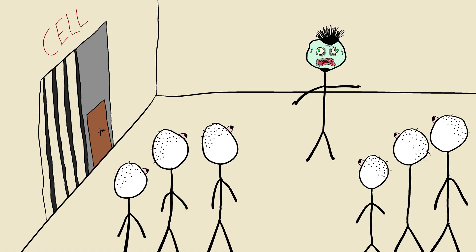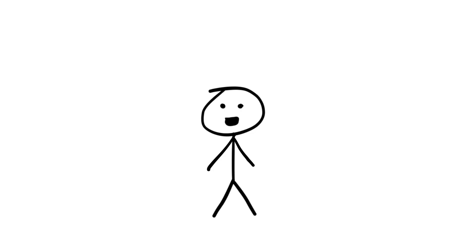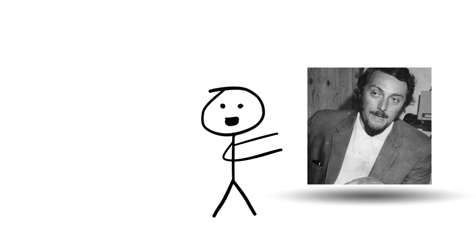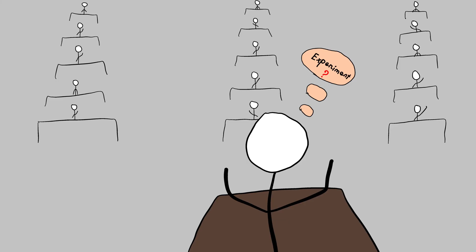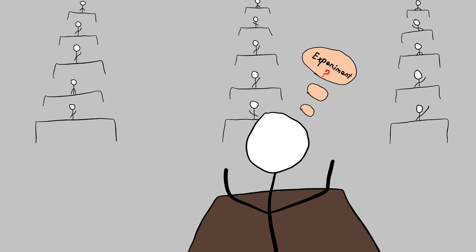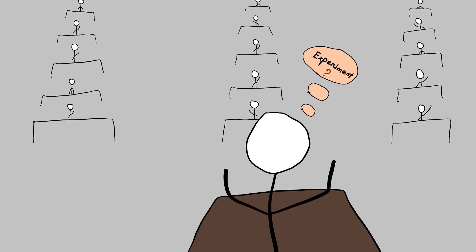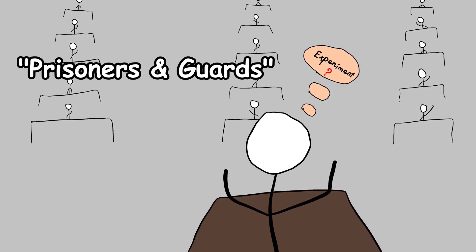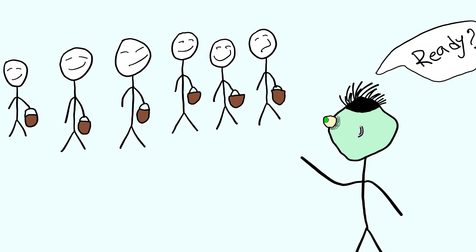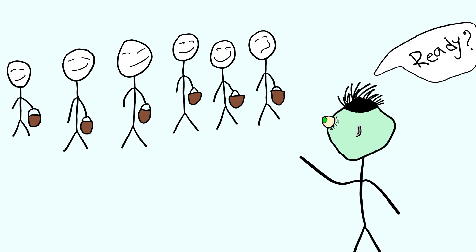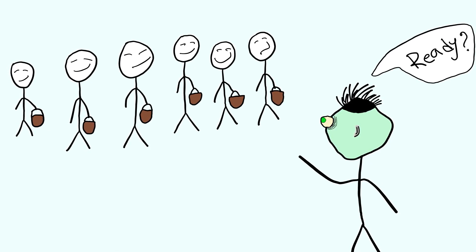Number 3: The Stanford Prison Experiment, 1971. Conducted by psychologist Philip Zimbardo in 1971, the Stanford Prison Experiment aimed to investigate the psychological effects on students through a simple role-play experiment of prisoners and guards. The experiment was scheduled for two weeks, but ended up lasting only six days. The participants were 24 male college students whose roles of prisoners and guards were randomly selected.